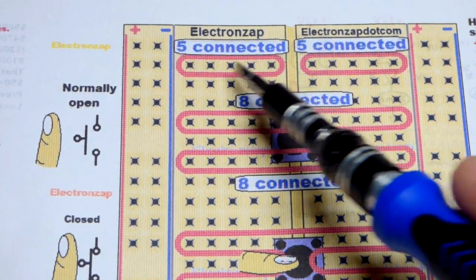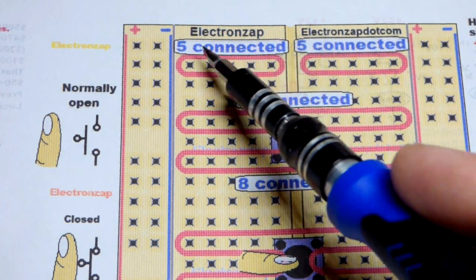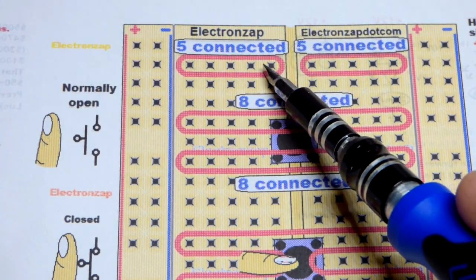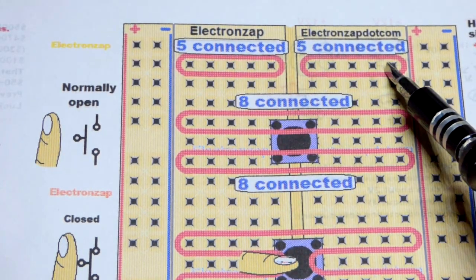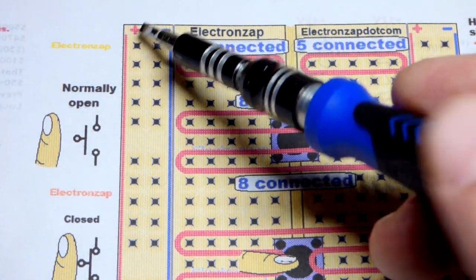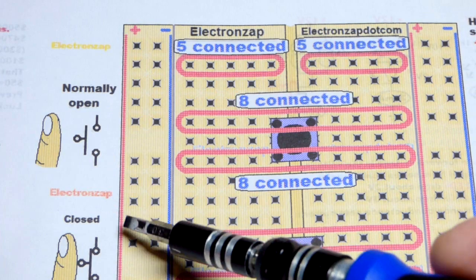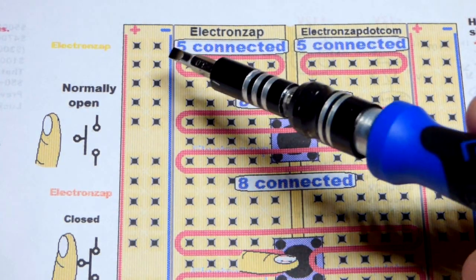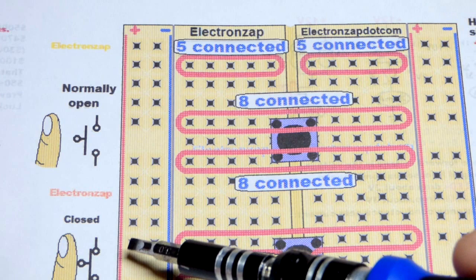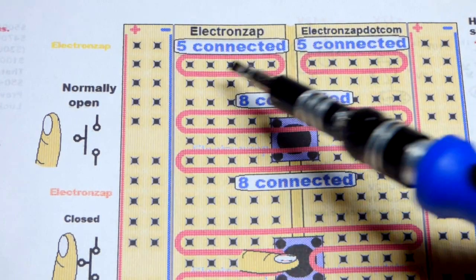But in any case, breadboards, they have usually a couple rows here where there's slots that are connected five across right there. And then you've got the supply ones. Usually they run the entire length of the board. Maybe they'll go halfway and then there'll be a gap. I don't have any that are like that, but I've seen other ones that are like that. But in any case, those go all the way.